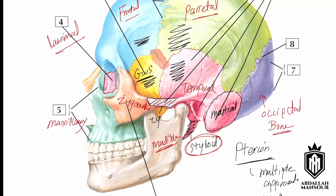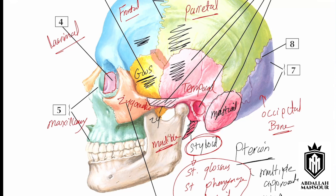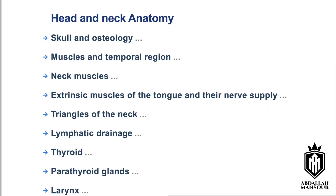Another question that can be asked is about the styloid process. The styloid process is part of the temporal bone and has multiple muscles attached to it. These muscles are styloglossus, stylopharyngeus, and the stylohyoid muscle. This area also includes the external auditory meatus.